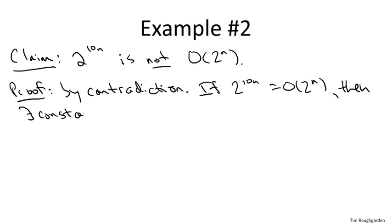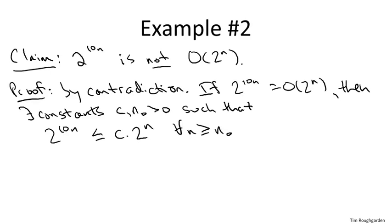So that for all large n, two to the ten n is bounded above by c times two to the n. So to complete the proof, what we have to do is go from this assumption and derive something which is obviously false. But that's easy to do just by canceling this two to the n term from both sides.